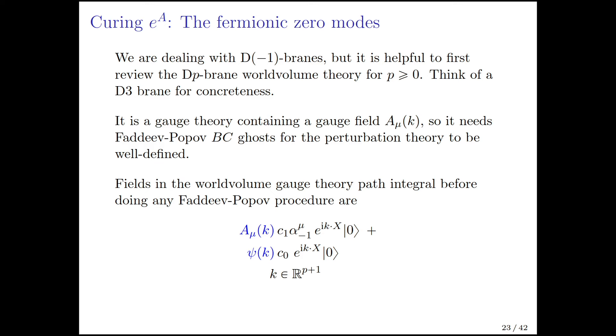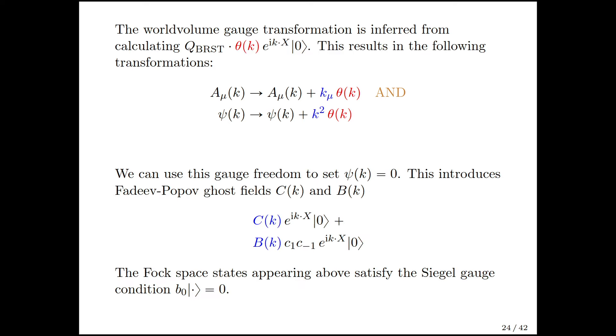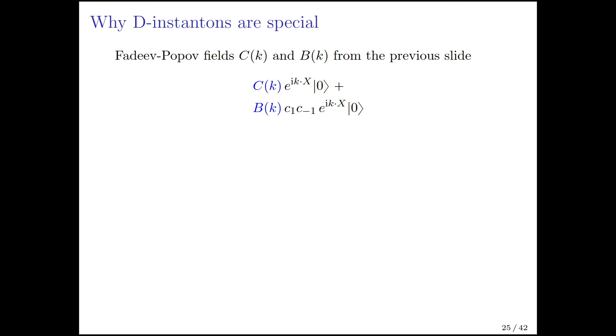We have these two fields before doing Faddeev-Popov. Gauge transformations are generated as follows: you have to act with the BRST charge on ghost number 0 fields. If theta is the gauge parameter, A mu shifts as usual, and psi shifts by k squared times theta. That is the gauge freedom we use to set psi of k to 0, and that's what introduces the c of k and b of k Faddeev-Popov ghost fields on the D-brane worldvolume that multiply states of ghost number 0 and ghost number 2.